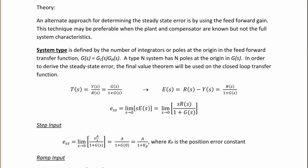System type is defined by the number of integrators or poles at the origin in the feed-forward gain. Recall that the feed-forward gain, G(S), is GC(S) times GP(S), or the product of the control transfer function times the plant transfer function. A type N system has N poles at the origin in G(S).